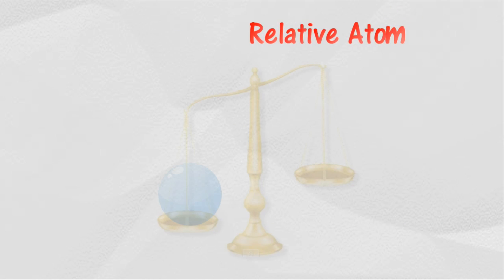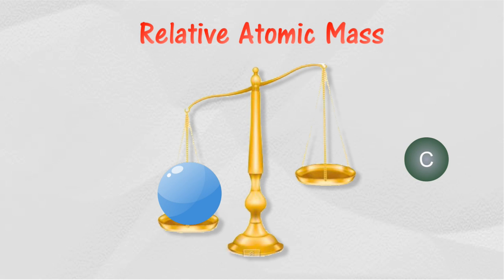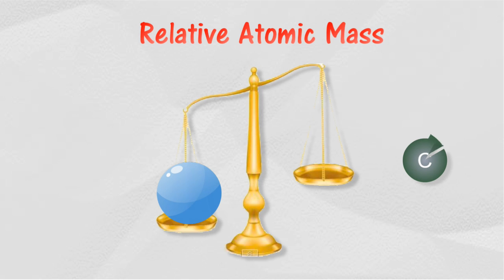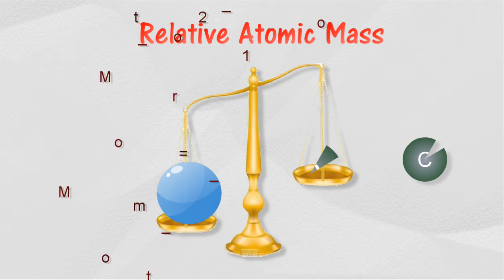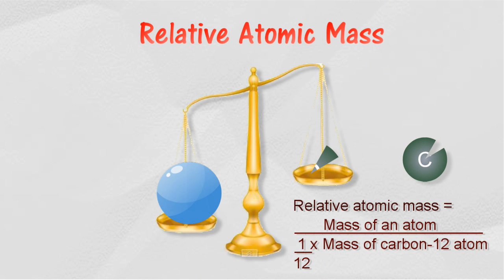An atom is too small and tiny to be weighed by any instruments. A more practical way to determine the mass of an atom is by comparing its mass with the mass of a standard atom. In modern scale, carbon-12 is used as a standard atom. Relative atomic mass of an element is the number of times the mass of an atom is greater than 1/12 of the mass of a carbon-12. The relative mass of a carbon-12 atom is 12.